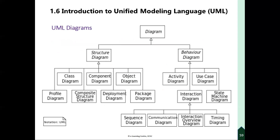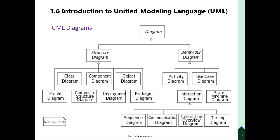Structure diagrams — also called Static diagrams — include: Class, Components, Object, Package, Deployment, Composite Structure, and Profile Diagrams. Behaviour diagrams — also called Dynamic diagrams — include: Activity Diagram, Use Case Diagram, and State Diagram. There are also several Interaction Diagrams: Sequence, Communication, Collaboration, Interaction Overview, and Timing Diagram.